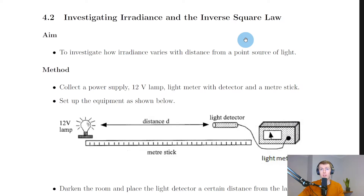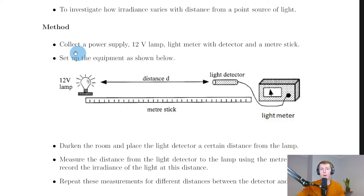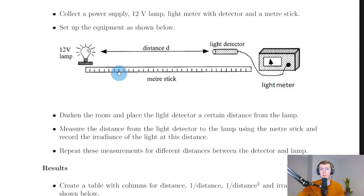We're going to look at the steps of a scientific report that you could write if carrying out this experiment in class. Our aim is to investigate how irradiance varies with distance from a point source of light and try to prove that it's an inverse square law. The equipment needed includes a power supply, 12 volt lamp, light meter with detector, and a meter stick, set up as shown.